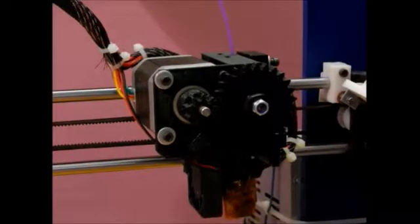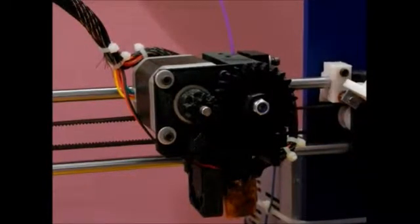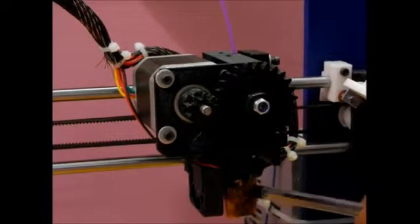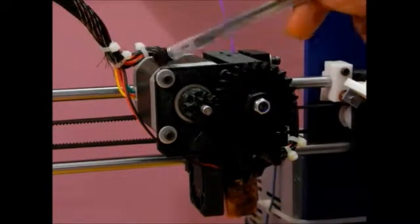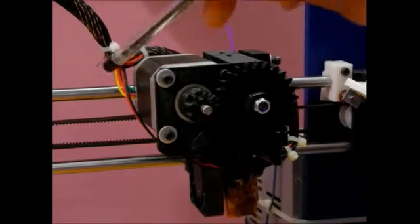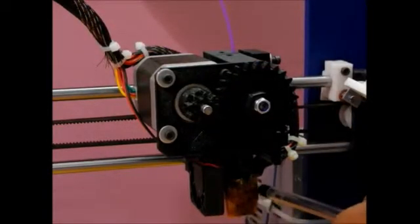Follow these steps to install the hotend onto the extruder assembly. If you are upgrading from J-head hotend, first remove the filament from the hotend, then remove the extruder assembly from the X carriage, and then remove your old J-head hotend.